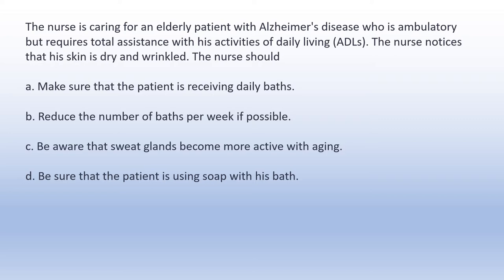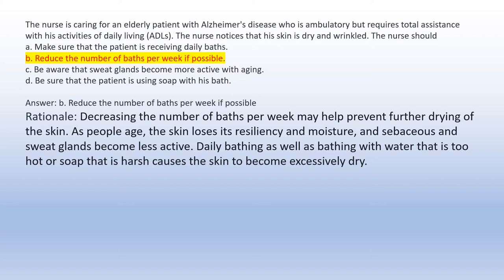The nurse is caring for an elderly patient with Alzheimer's disease who requires total assistance with ADLs. The nurse notices that his skin is dry and wrinkled. The nurse should: A. Make sure the patient receives daily baths. B. Reduce the number of baths per week if possible. C. Be aware that sweat glands become more active with aging. D. Be sure the patient is using soap with his bath. Answer B: Reduce the number of baths per week if possible. Rationale: Decreasing baths per week may help prevent further drying. As people age, skin loses resiliency and moisture, and sebaceous and sweat glands become less active. Daily bathing with hot water or harsh soap causes the skin to become excessively dry.